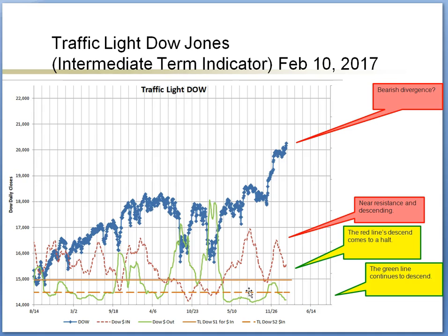Right now, there are some bearish and bullish signals. On the bearish side, a bearish divergence could be forming because as the index moves up, the money flowing in is actually going in the opposite direction. But the bearish tone is more material if the green line creases up — so far the green line is descending. On the bullish side, the green line continues to descend. I would say cautiously that the intermediate bullish trade continues and a pullback could be expected.